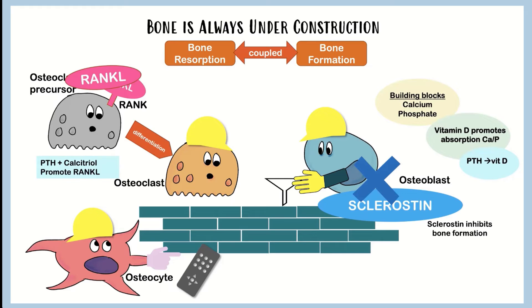PTH and calcitriol - activated vitamin D - can also break down bone when needed, because this hormone axis is there to protect us from low calcium. If there's a low calcium situation, the parathyroid gland will produce PTH, it will make more calcitriol, and together these hormones go to the bone and take the calcium they need. They promote RANK ligand production and make more osteoclasts, which go to the bone, take out that calcium, and help put it back into the bloodstream. So that's part of our homeostasis and a very healthy process in small amounts.